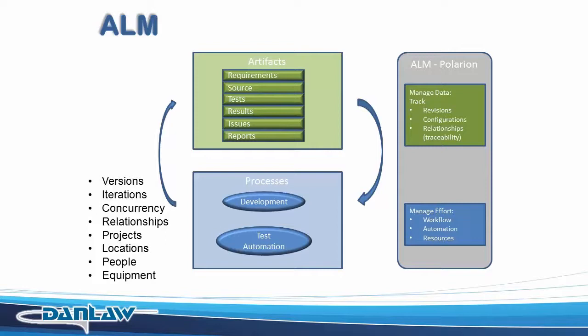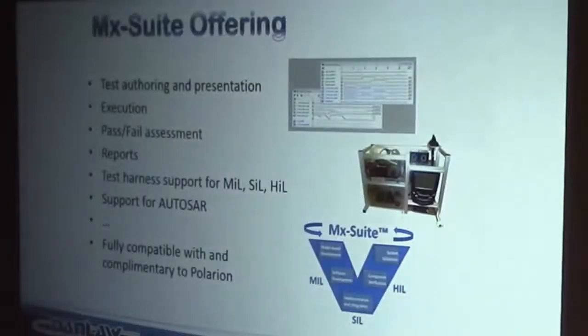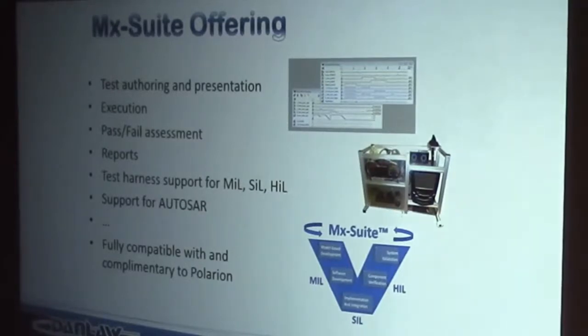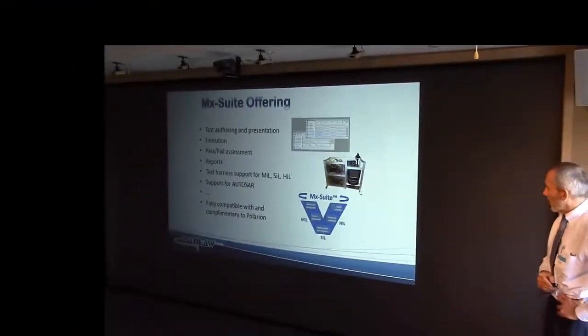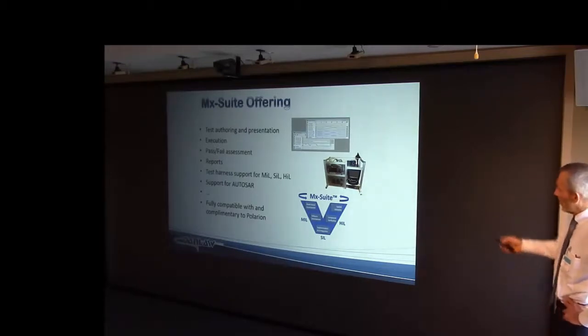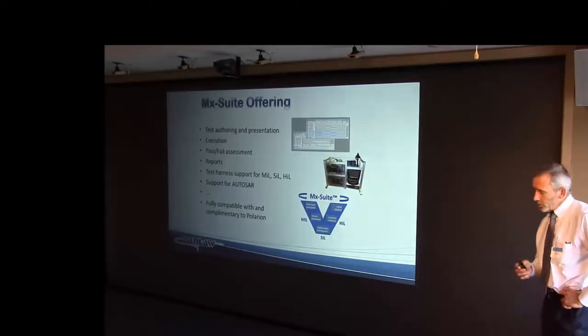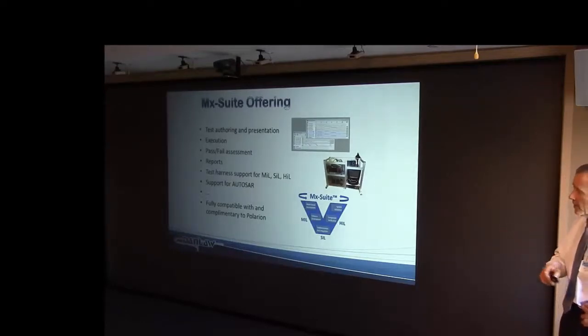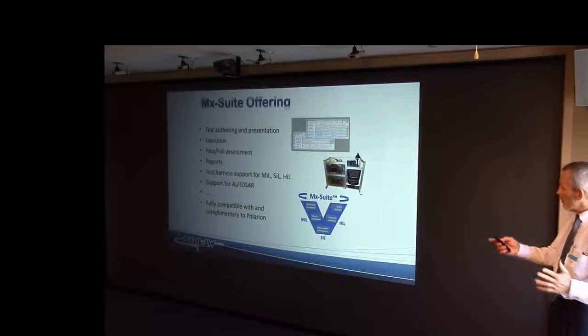The ALM tool — the Polarion tool — has many capabilities we saw earlier. Where the Danlaw tool comes in is the capability of executing tests. There are very complementary things between our offering and the ALM solution from Polarion. We're involved in test authoring, test presentation, test execution, pass-fail analysis, reports, and test harnesses — which is a test jig for testing hardware. We can test software, we can test models, with support for automotive standards including AUTOSAR and ISO 26262, and the software development cycle that automotive development organisations are familiar with.